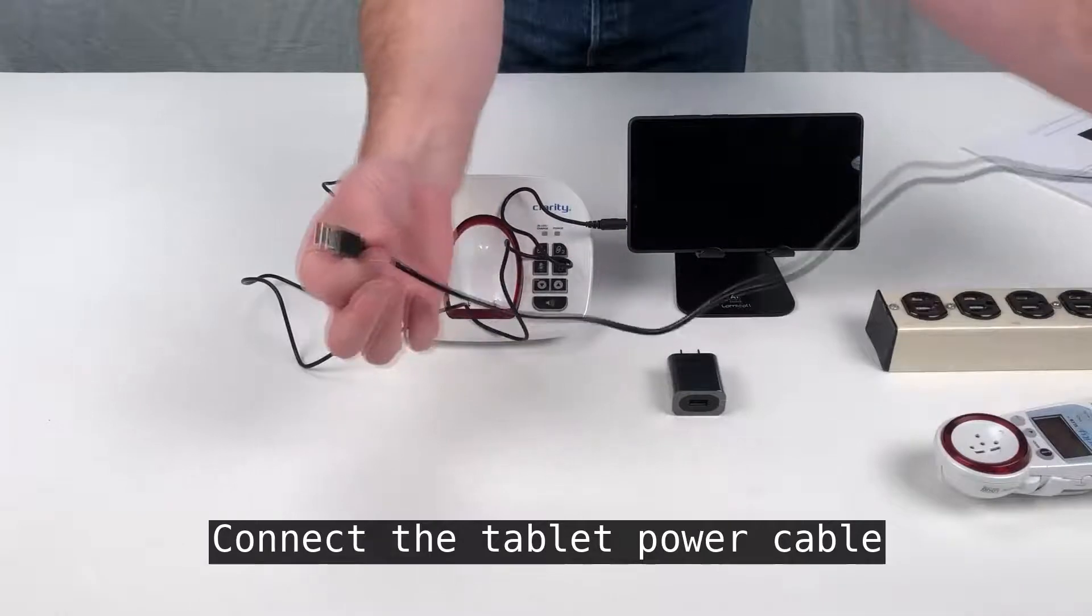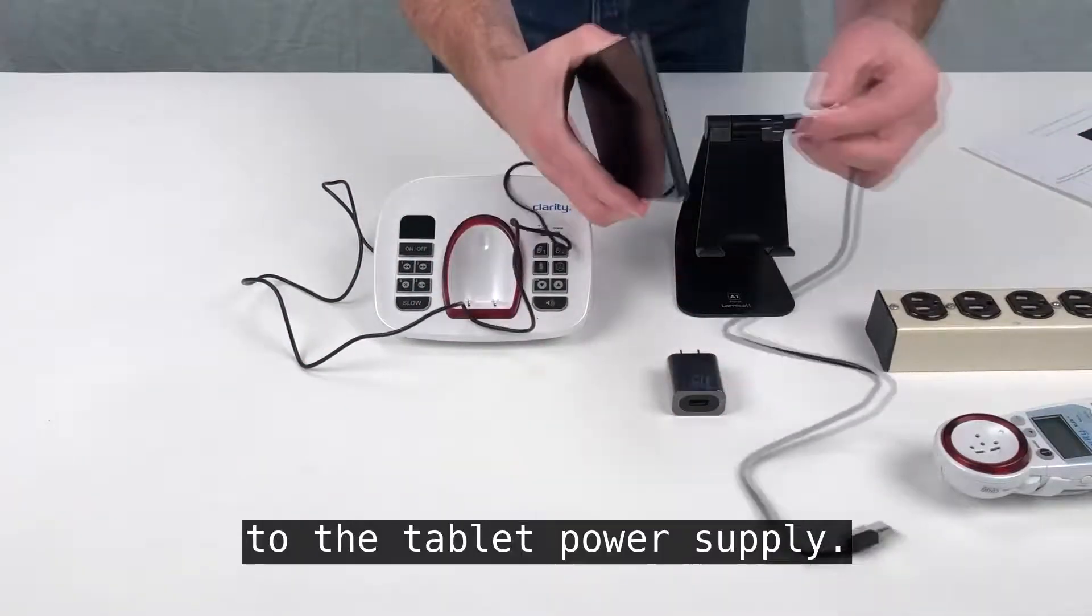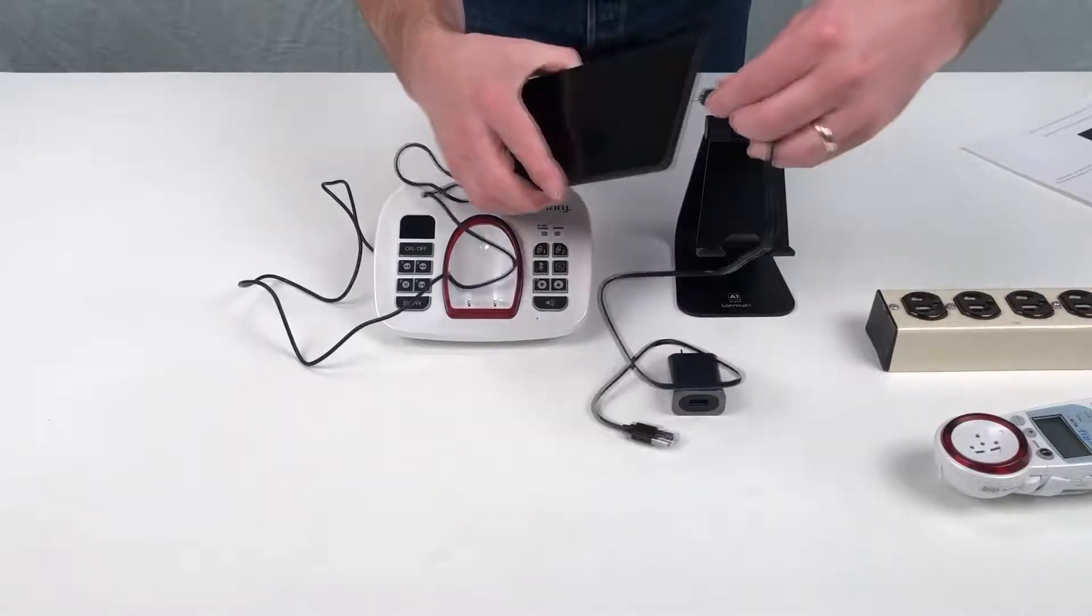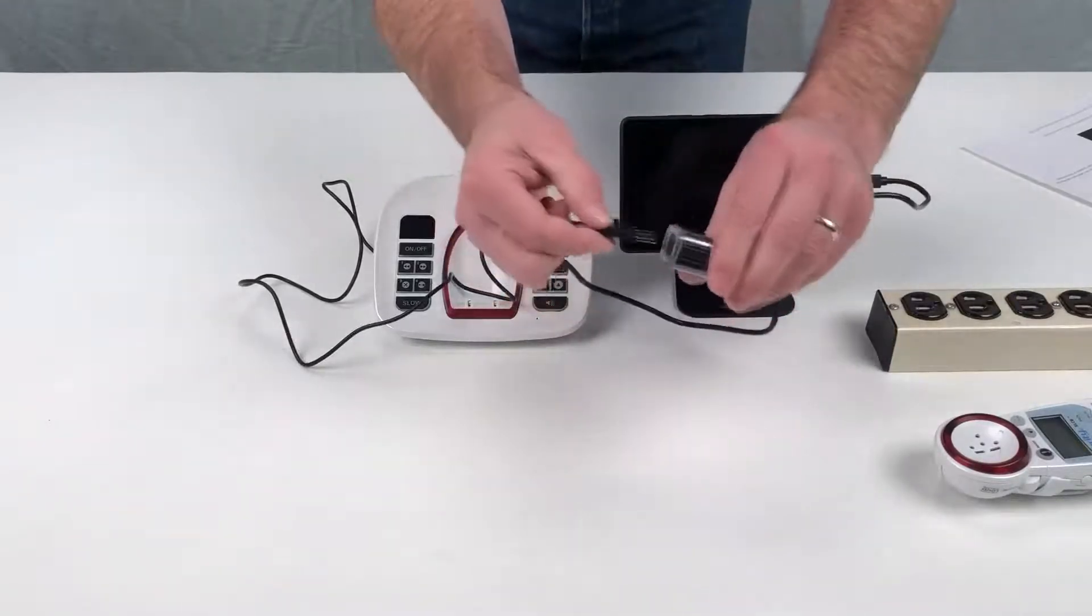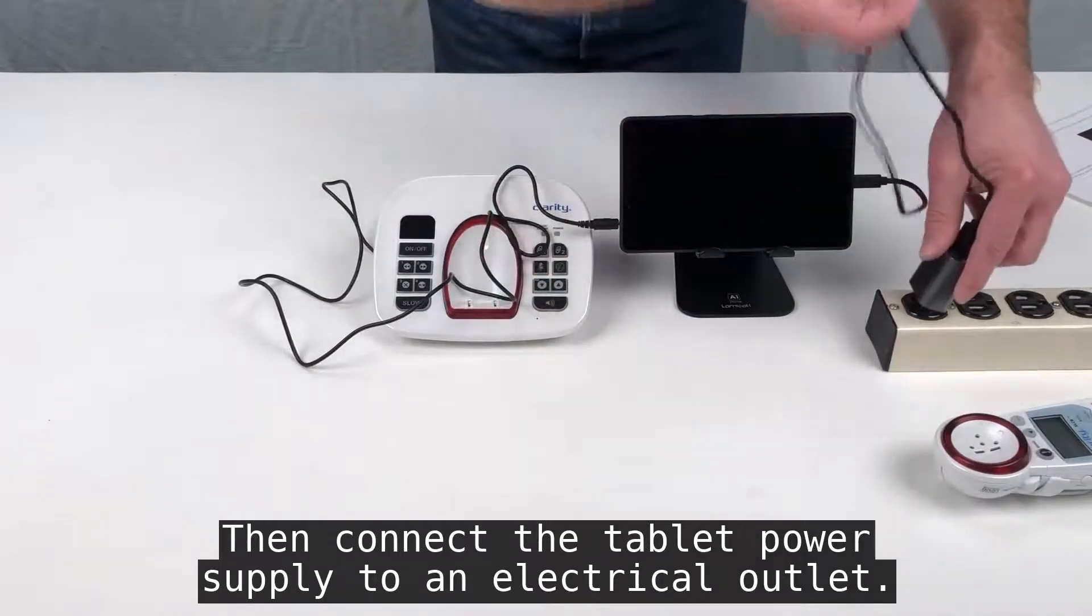Connect the tablet power cable from the Android tablet charging port to the tablet power supply. Then connect the tablet power supply to an electrical outlet.